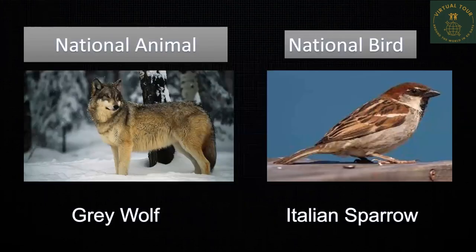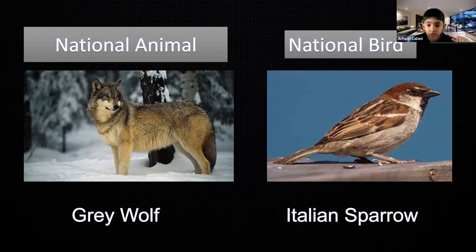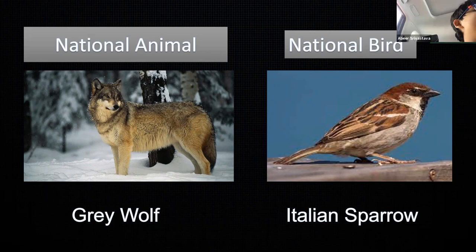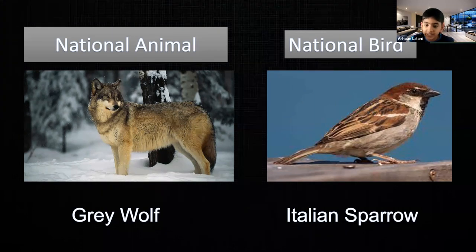The gray wolf is the national animal of Italy — here you can see the image. The national bird is the Italian sparrow. One student mentioned she can actually see the Italian sparrow in her own neighborhood!